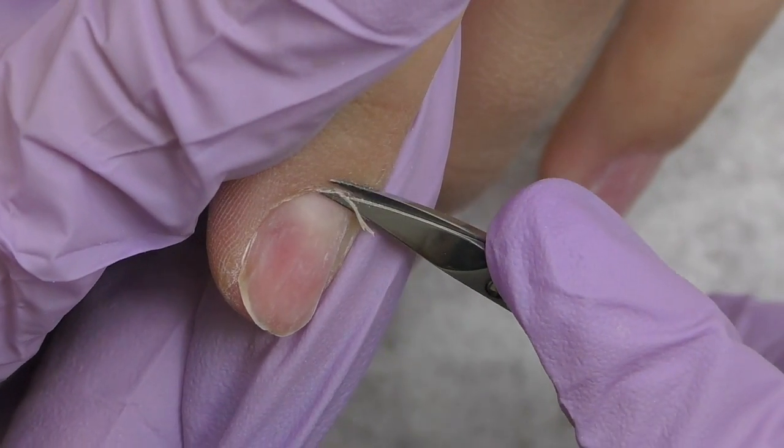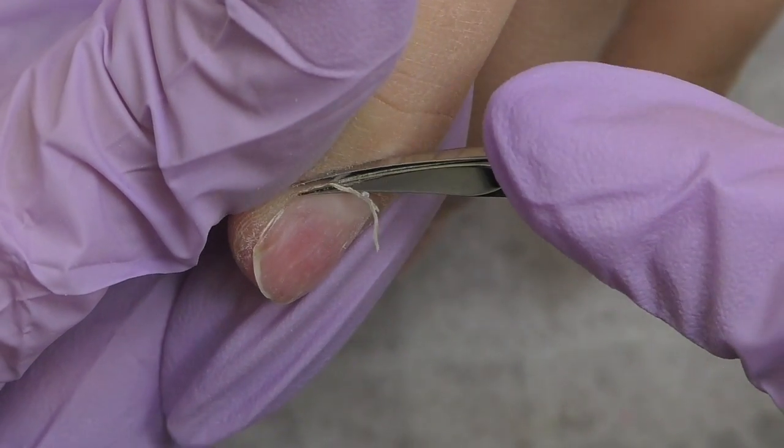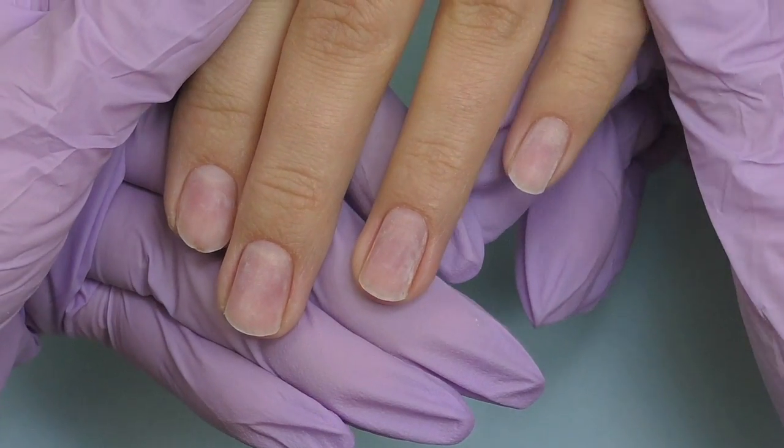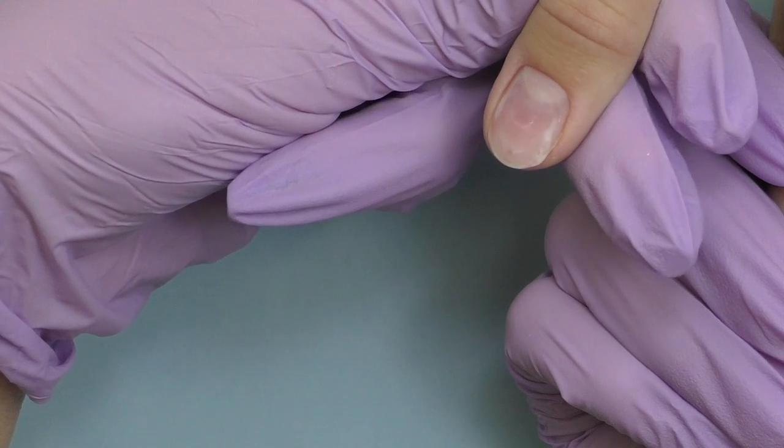Meanwhile, I'm finishing up with the manicure with cuticle scissors. And now we have beautiful natural nails that we just manicured. Let's mix the color that is going to look like natural nail.